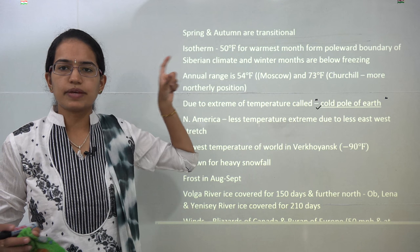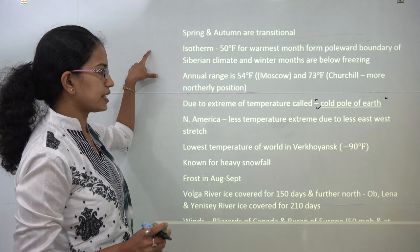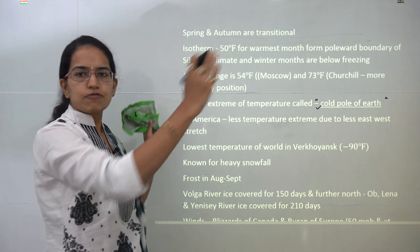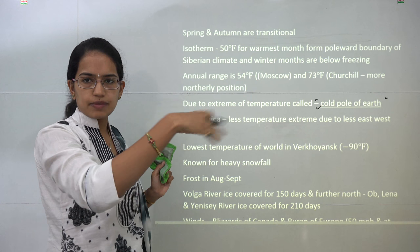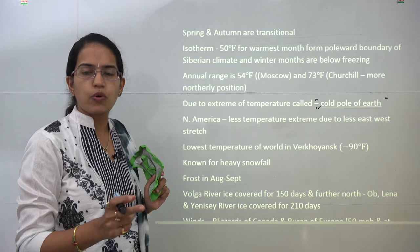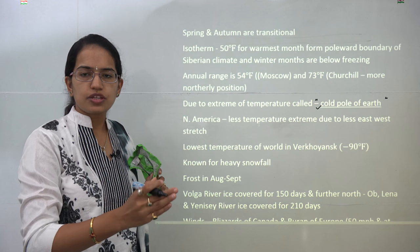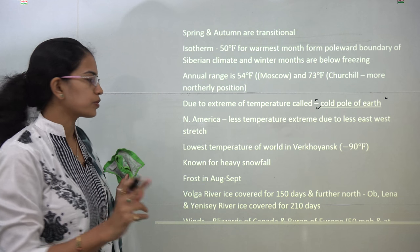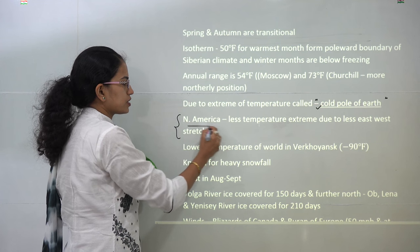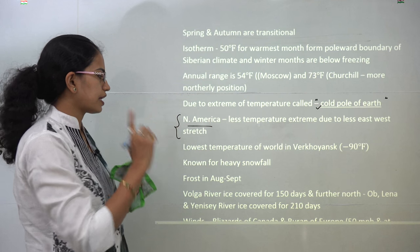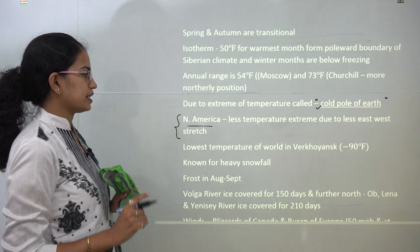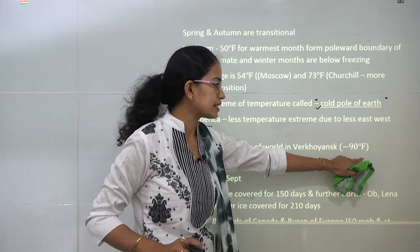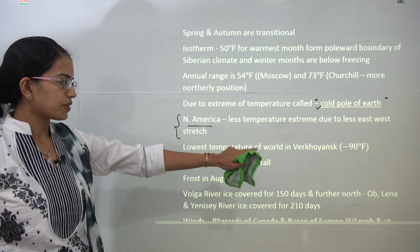The North American region has lesser temperature extremity because the east-west extent is less. However, in the European Siberian region, the temperature ranges are more, due to the fact that the east-west extent or the landmass is greater. That is one of the major differences between the North American and the European type of continental Siberian climate. The lowest temperature has been recorded in this zone, going to around minus 90 degrees Fahrenheit at Verkhoyansk.